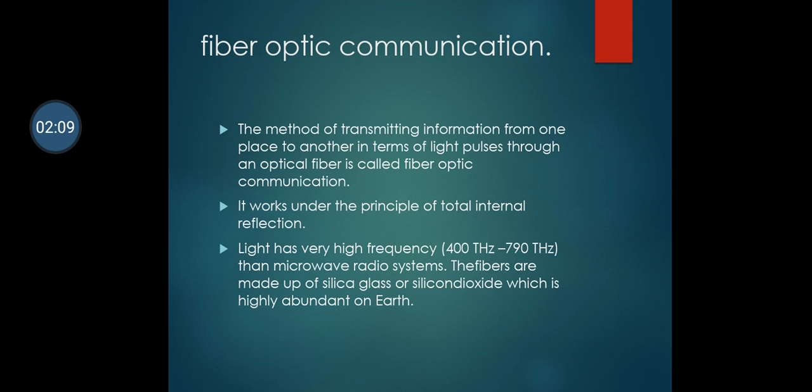Light has very high frequency, 400 Hz to 790 Hz, compared to microwave radio systems. The fibers are made up of silica glass or silicon dioxide which is highly abundant on earth. With this, they are making the fiber optic cables.